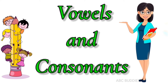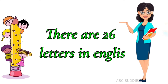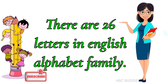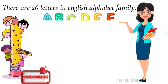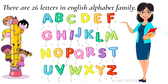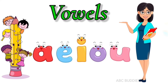Vowels and Consonants. In this video, we will learn about vowels and consonants. There are 26 letters in the English alphabet family. Out of these, 5 are vowels.